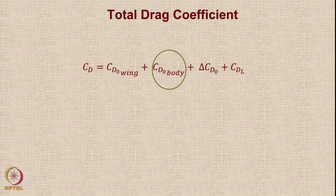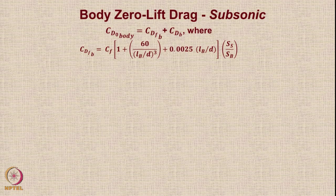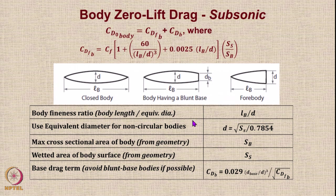That covers CDO wing. Now let us move on to CDO body. Again, there will be three cases: subsonic, transonic, and supersonic. In the subsonic case, the formula is very similar to what is used for transport aircraft. The only difference is that the value of LB/D — depending on what type of body is used — requires various formulae to get the correct expressions.